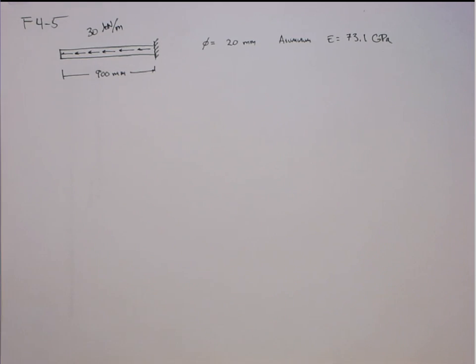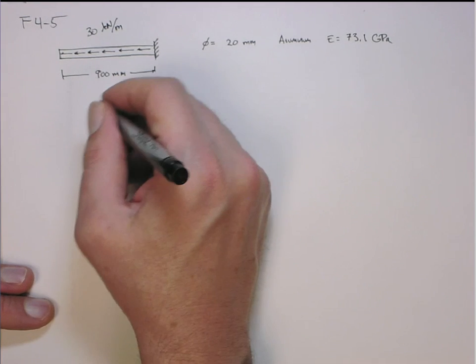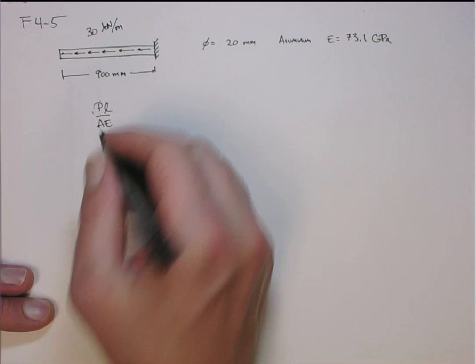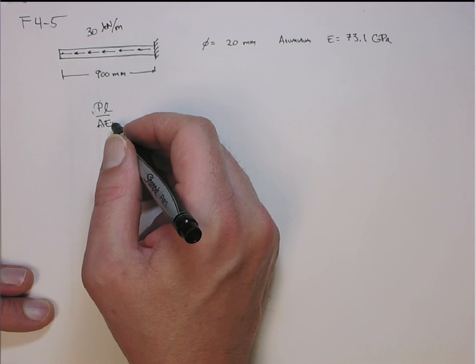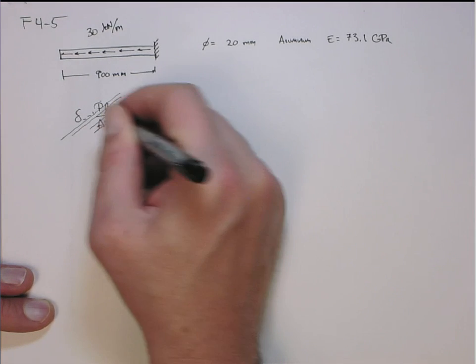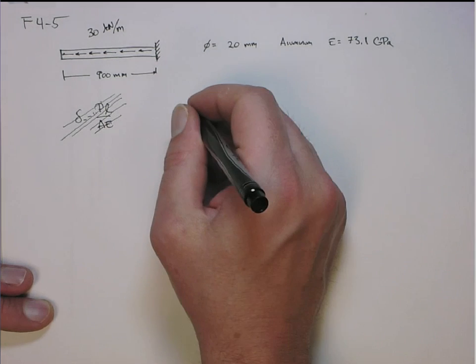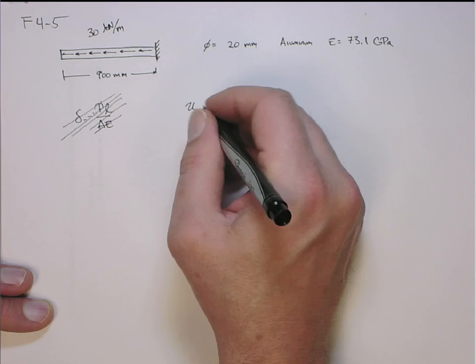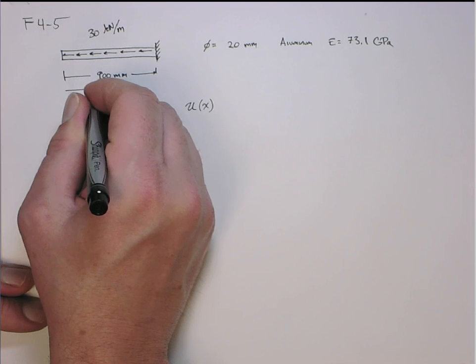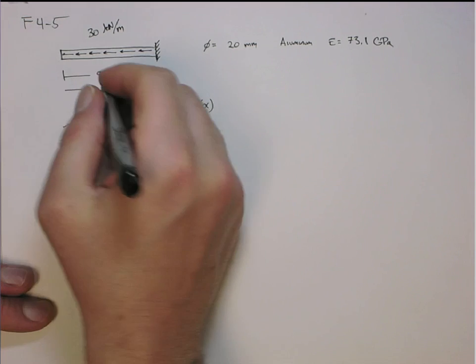So how do we do this? Well, as I mentioned before, PL over AE only works when all these parameters are constant. So when P is constant, or A is constant, or E is constant, we can use this equation to get the total elongation. But in this case, P is not a constant. So this equation does not work. We can't use that. We have to go back to the original definition when I derived it in class. We found that the displacement at some point x. Let's call x this way. Should we define x that way? Yeah, let's do it. Let's make it simple.